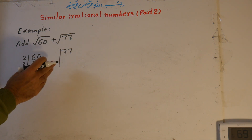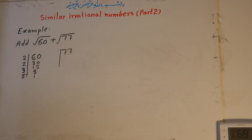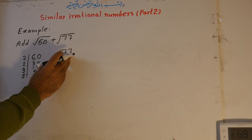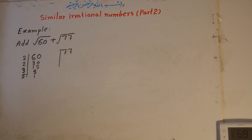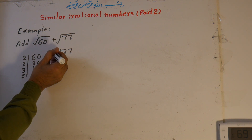For 77: it is not divisible by 2 because the last digit is not even; not divisible by 3 because 7+7=14 and 14 is not divisible by 3; and not divisible by 5 because the last digit is neither 0 nor 5. So 77 is divisible by 7, giving 11. So 77 = 7 × 11.